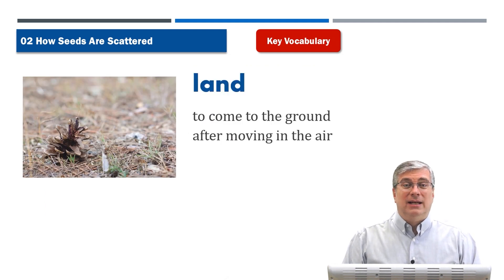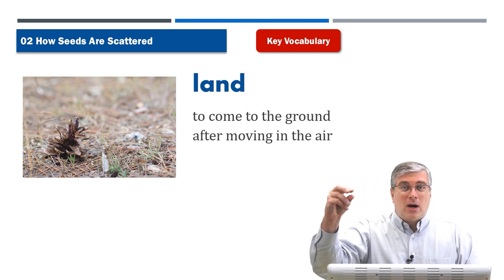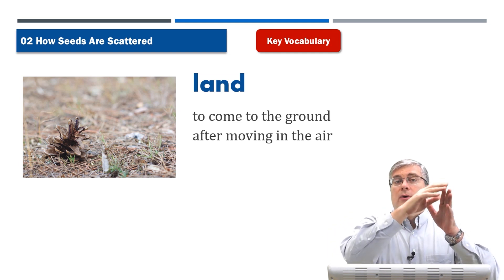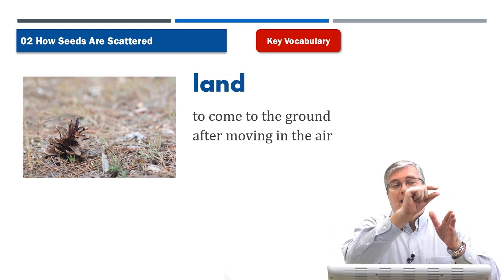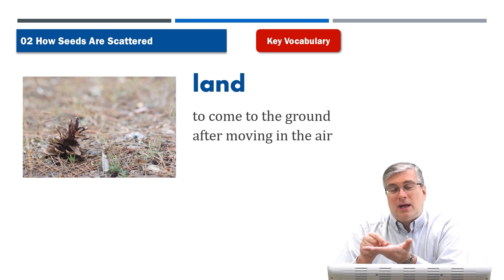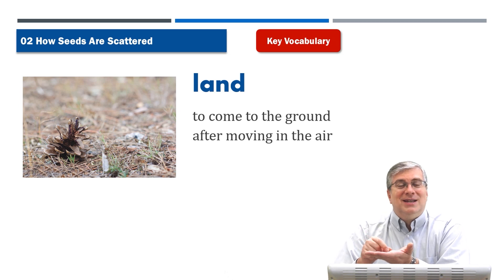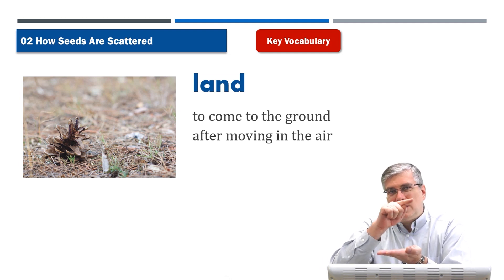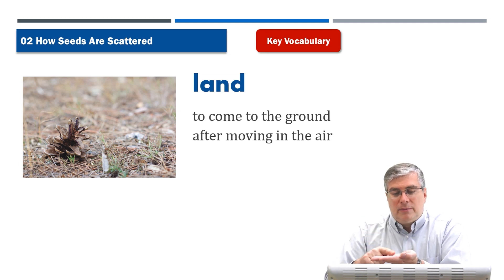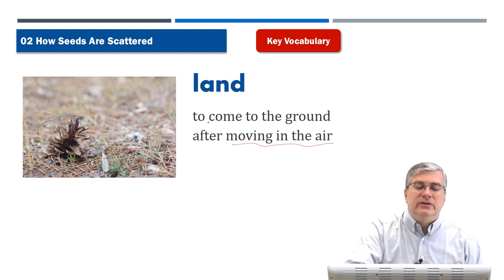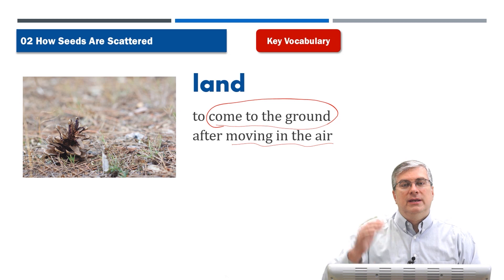Next word is land. If something is flying in the air like a dandelion seed that's blowing in the wind, after a while the wind will stop or get weaker and the dandelion seed will come down and touch back onto land. Then we say that it lands. Land is a noun — it's the ground that you stand on. But land is also a verb, meaning something that was flying comes back to the ground, to come to the ground after moving in the air.